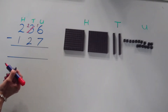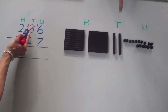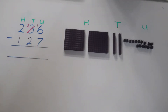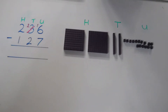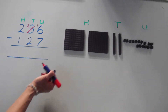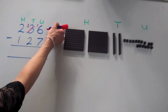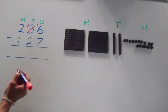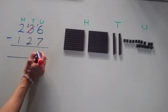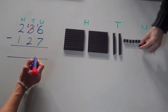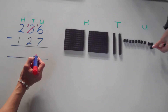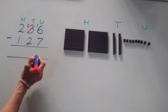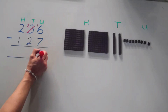We now have two tens in the tens column and we have a 10 and a 6, or 16 units altogether in the units column. Now we need to take away 7 from 16. We can do it. Let's take away 7 from our 16, and that leaves us with 9 units.